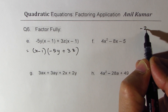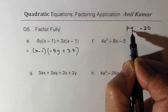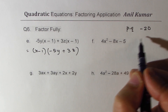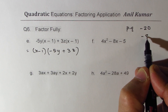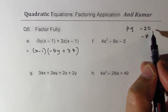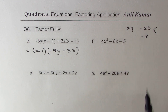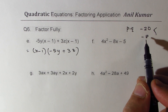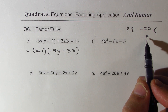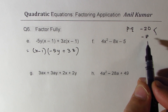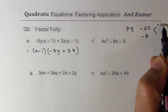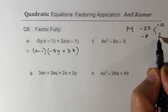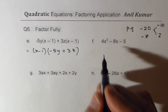Now we have 4 times -5, so we're looking for a product of -20 and a sum of -8. The negative number has to be bigger in magnitude, so -10 and 2 will work.